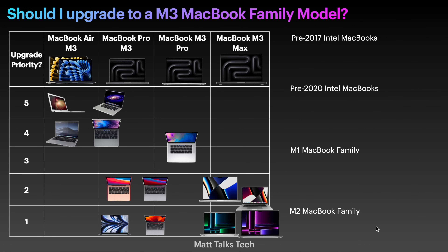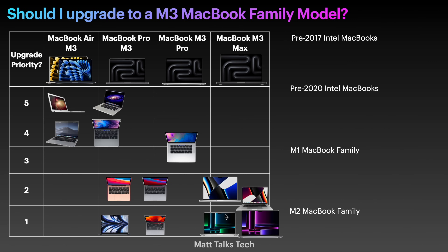To summarize the chart: these are my own opinions on where you should sit if you're considering an upgrade right now. The key priority is clear — if you're on an Intel machine, you're up at the high end of the scale. With the M1 and M2 families, it's all down at the lower end. Intels should be looking at upgrading; if you've got an M1 or M2, there's really not much point — unless you just want that new screen or the feeling of having the latest MacBook.